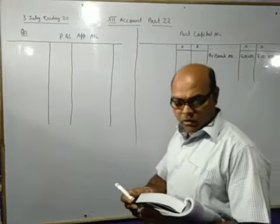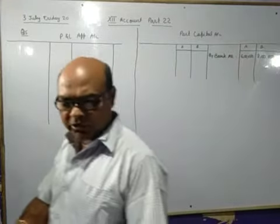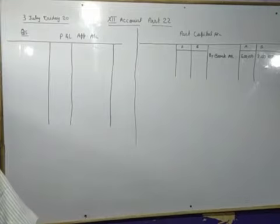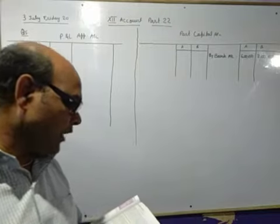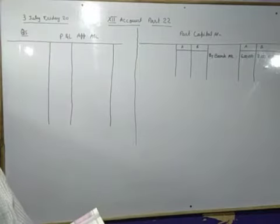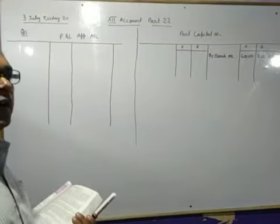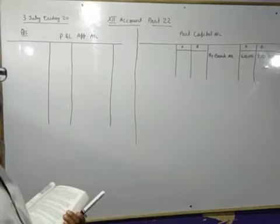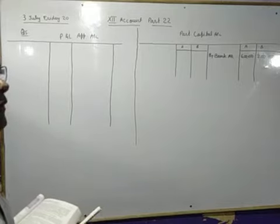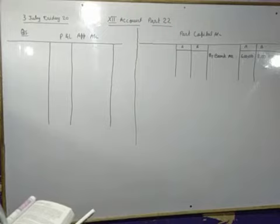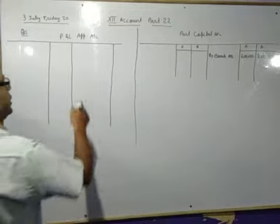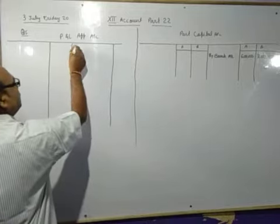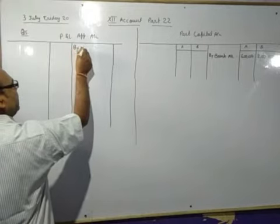Now, on 31st March 2019, the net profit before taking into account the provision of deed was 2 lakhs 40,000. This is the net profit. Net profit will be transferred to P&L appropriation. You will pass the entry profit and loss account debit to P&L appropriation. So, P&L appropriation account credit side, you will record by net profit.